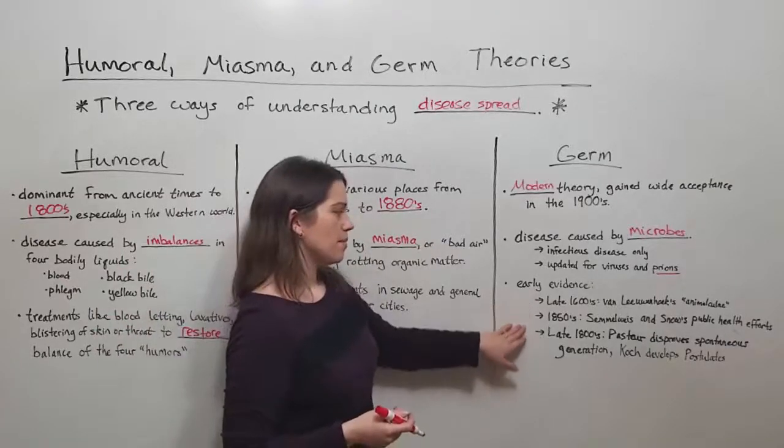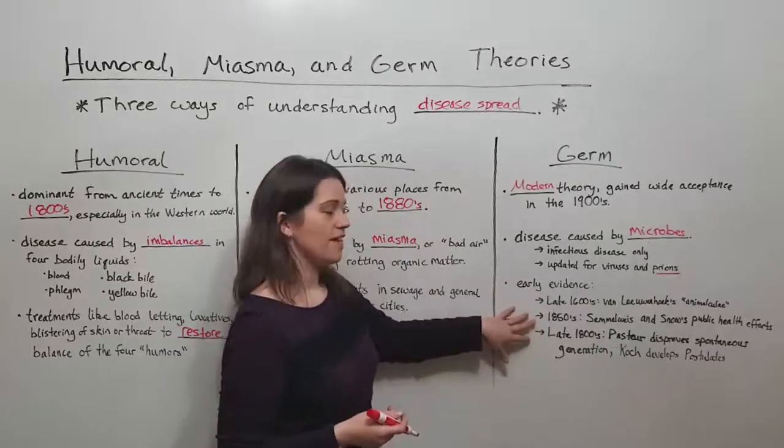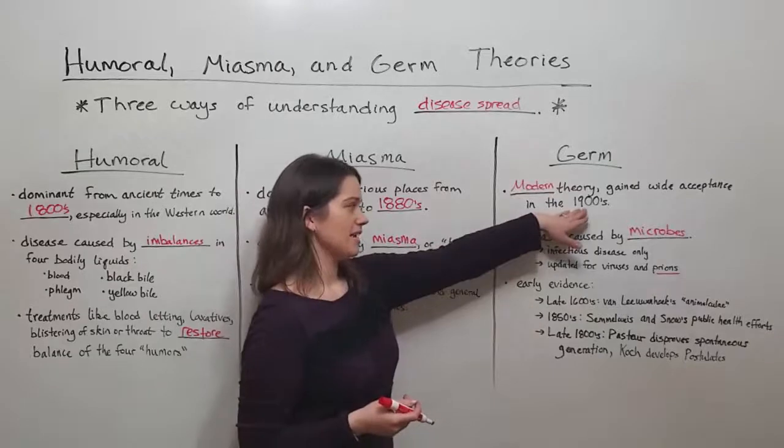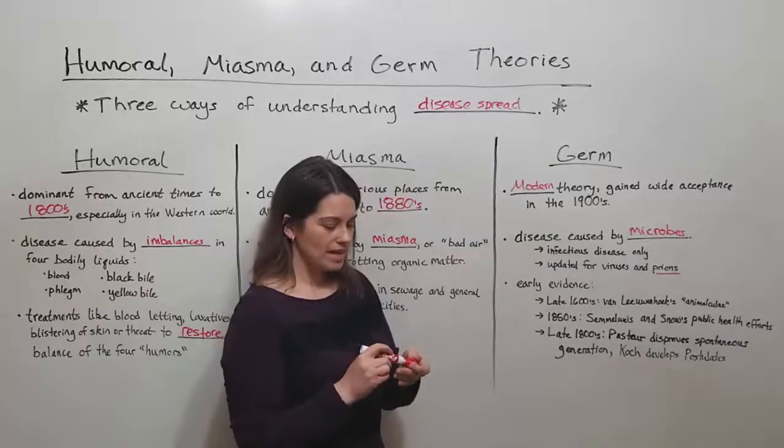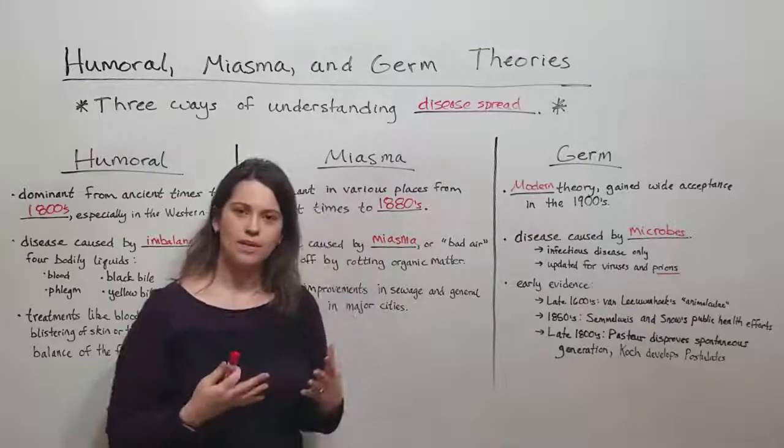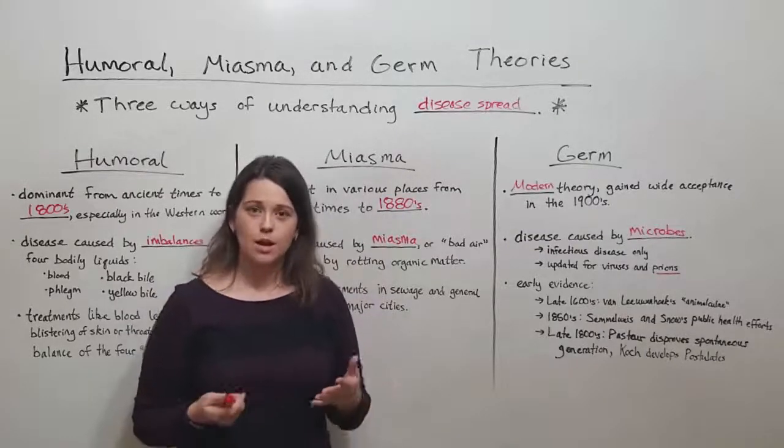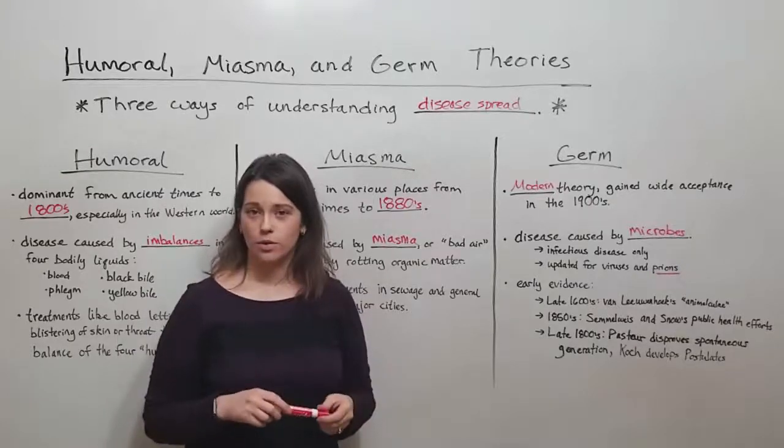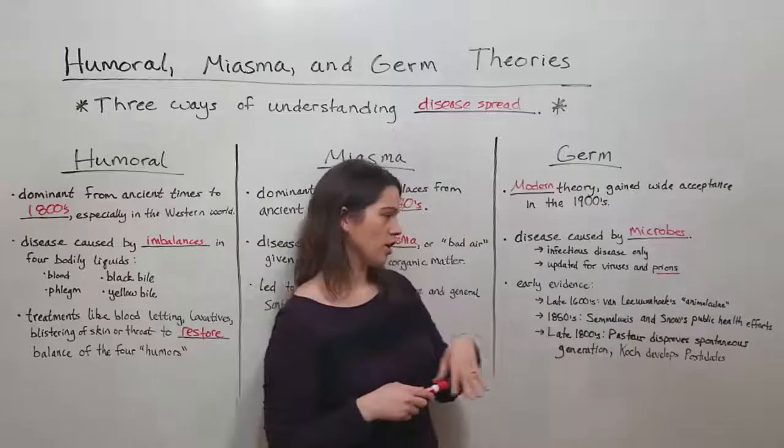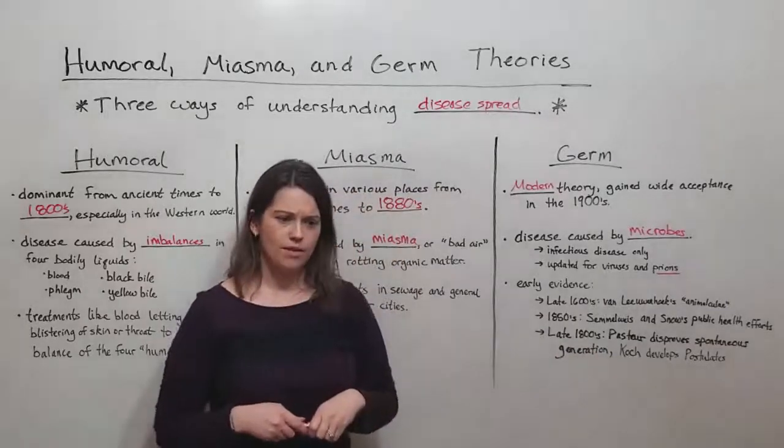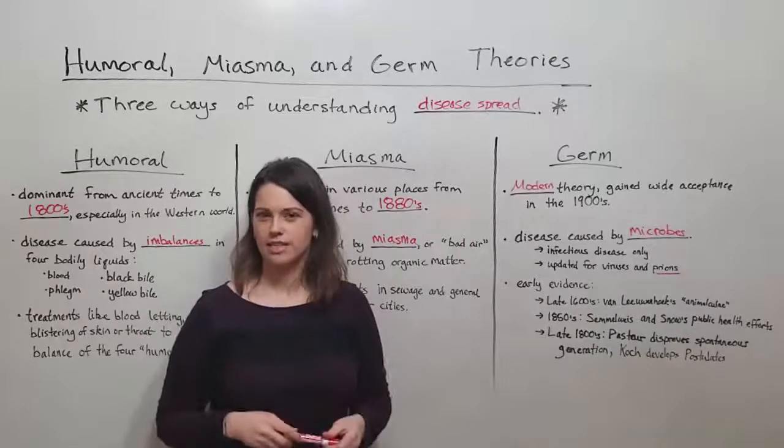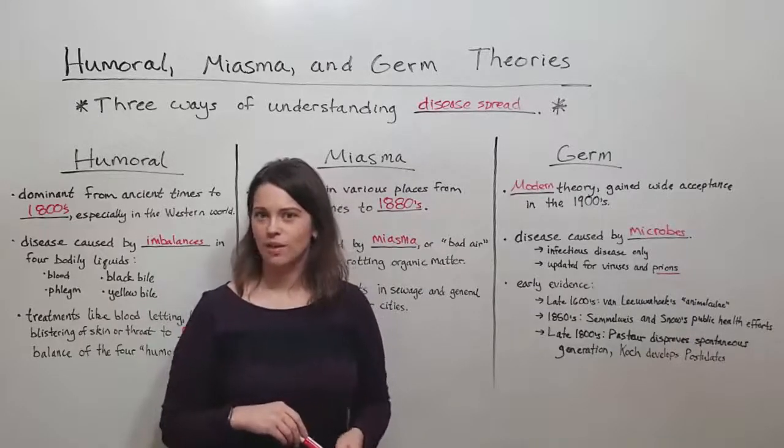And so all of these advances towards germ theory really predated its final acceptance in the 1900s. So that's it today. If you're interested in these topics about epidemiology and disease spread, please see my playlist for those types of videos. You can learn more about Koch's postulates, various types of diseases and the way that they're transmitted, vectors, things like that. Thanks for watching Biology Professor.